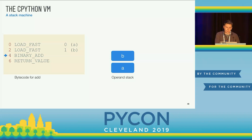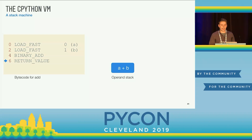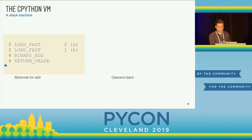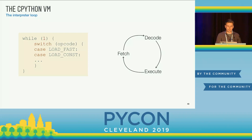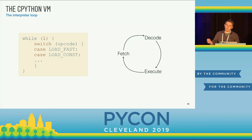After we execute the first instruction, this LOAD_FAST instruction pushes the value of A onto the stack. Then the second LOAD_FAST pushes the value of B onto the stack. Then we execute BINARY_ADD, which pops two values off of the stack and adds them — for whatever that means in Python, because if it was two integers it could be doing integer addition, or if it was two strings it could be concatenating them — and pushes the result back onto the stack. Finally, RETURN_VALUE pops the stack and returns the result. The interpreter loop is basically just a giant switch statement doing a fetch, decode, execute cycle for every opcode.